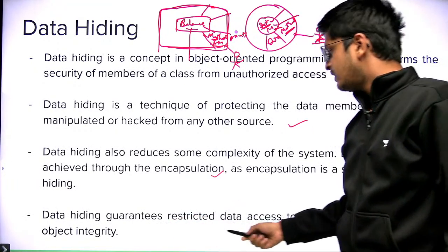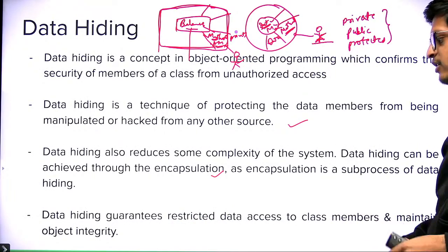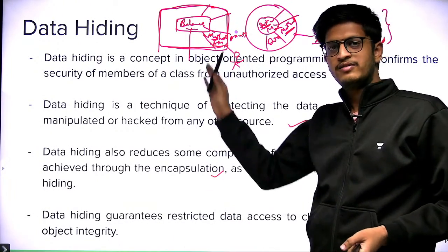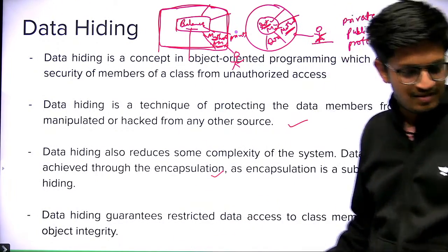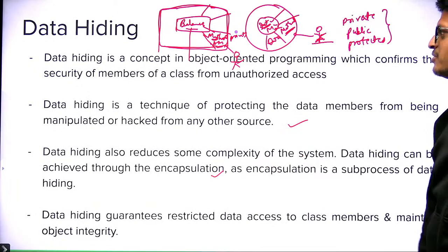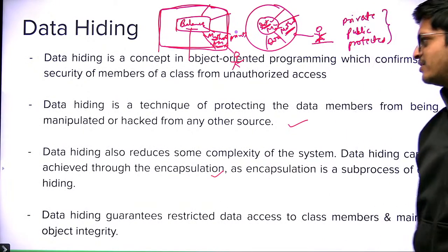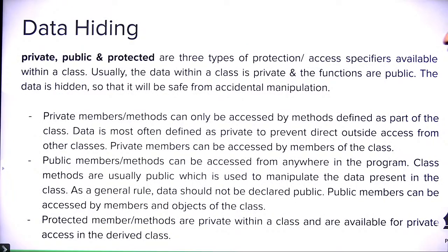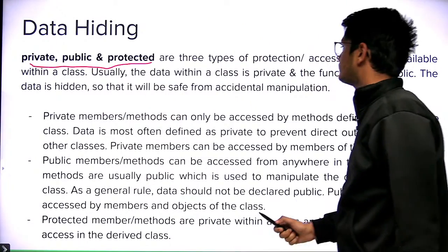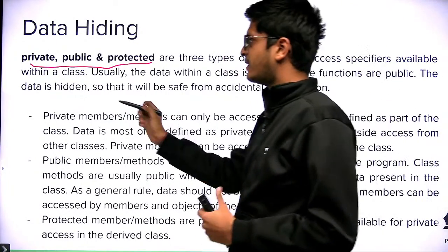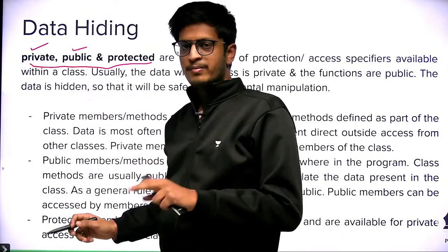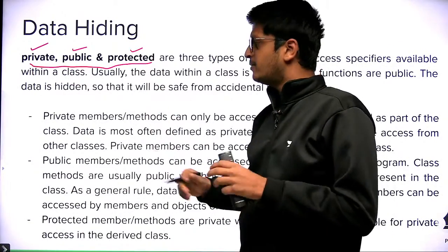Data hiding guarantees restricted data access to class members and maintains object integrity. In C++, we have three access specifiers — three protection levels. Private has the maximum protection level, public has the least, and protected has an intermediate protection level. You cannot access private and protected members outside the class. Private members cannot be inherited in derived classes.